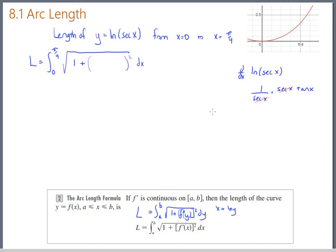Nicely enough for us, the secants cancel. And the derivative of natural log of secant of x is just tangent of x. So we get the square root of 1 plus tangent squared. That stuff inside of there might ring a little bell for you. 1 plus tangent squared happens to be secant squared.